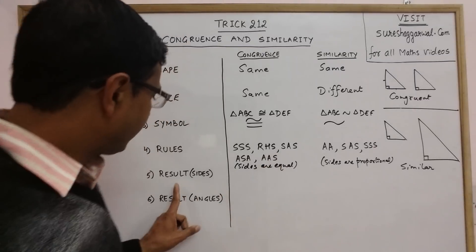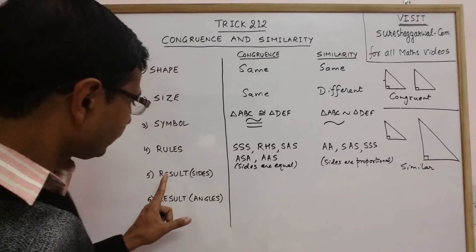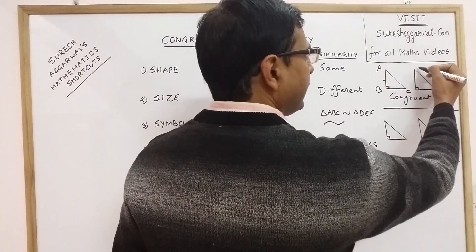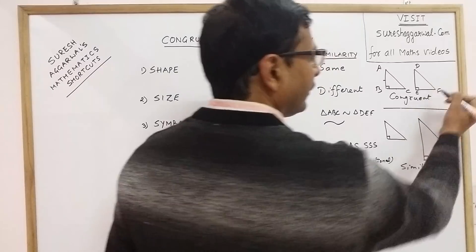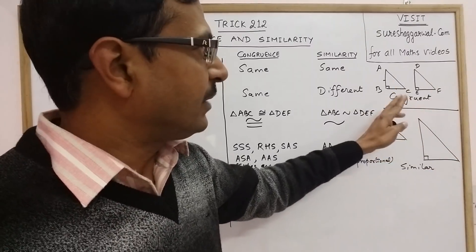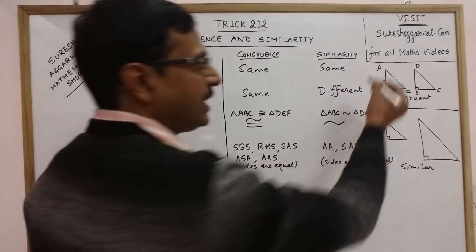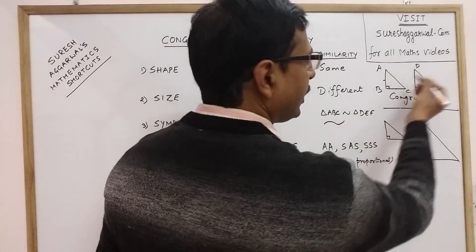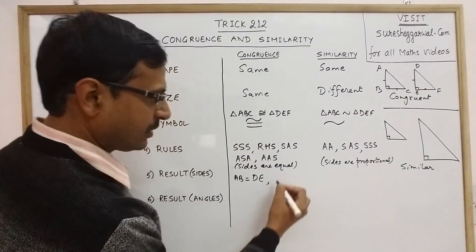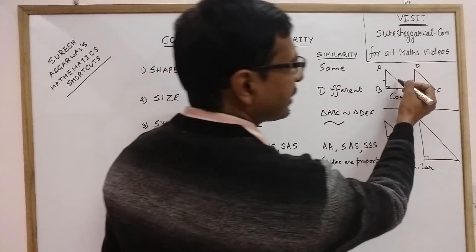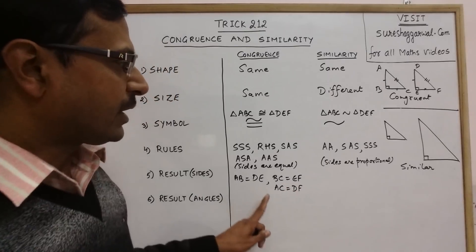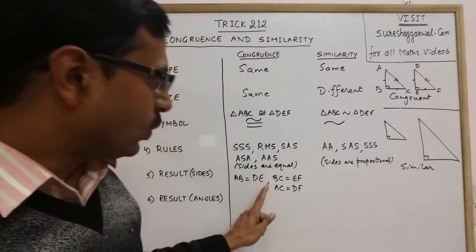For results on sides in congruent triangles — suppose triangles ABC and DEF are congruent. Once we have two congruent triangles, we can equate the corresponding sides: AB equals DE, BC equals EF, and AC equals DF. So the corresponding sides of the two congruent figures are equal.